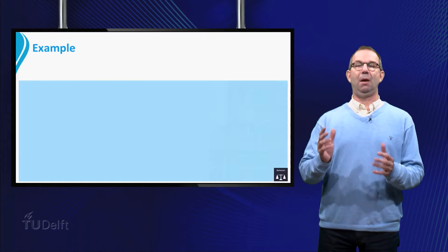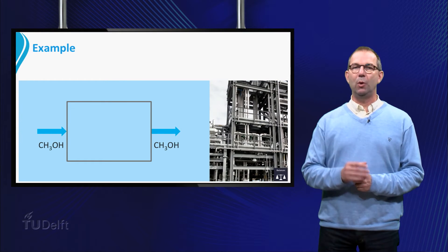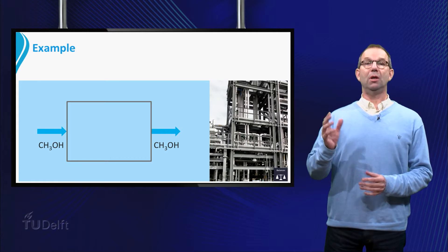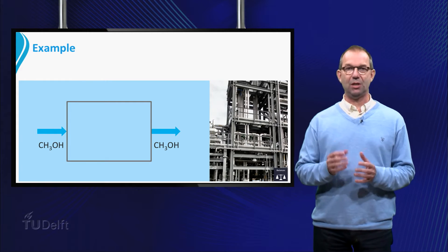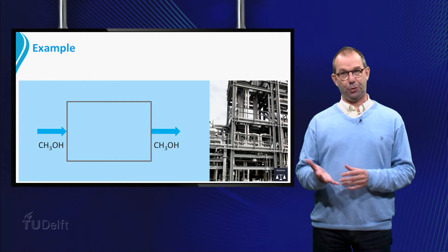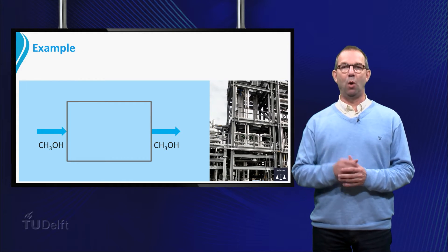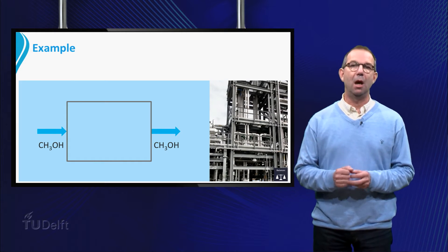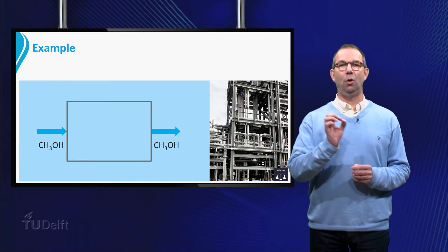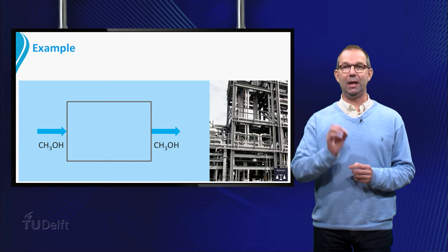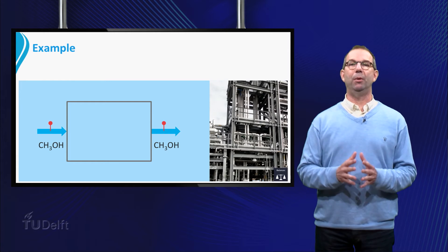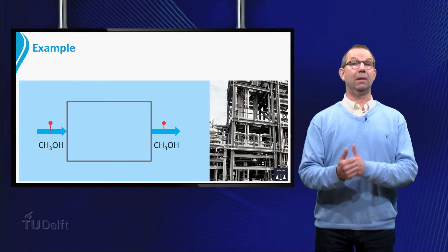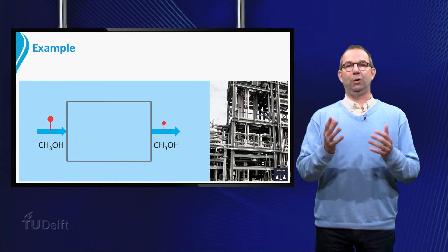What is a mass balance? We are going to answer this question via the following example. Suppose we have a reactor with a process in which methanol CH3OH is one of the components which enters and leaves the reactor. We measure the mass of methanol flowing in and out of the reactor. In this example, we take that more methanol is flowing in than out. What is the reason for this difference?